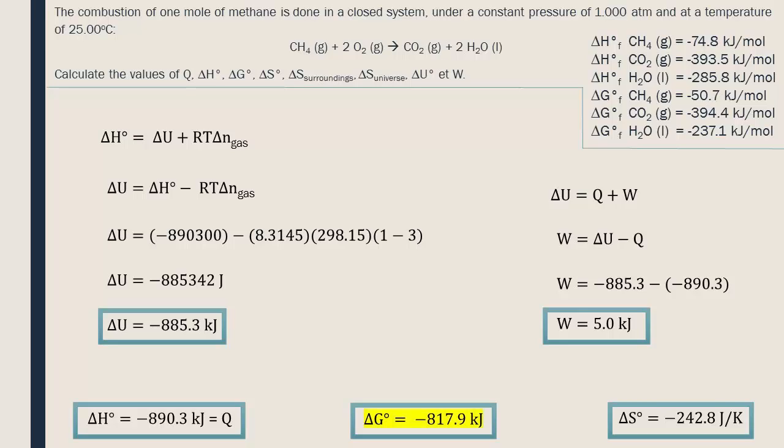Consequently, the value of delta G, negative 817.9 kilojoules, was the net amount of free energy that would be able to be used.